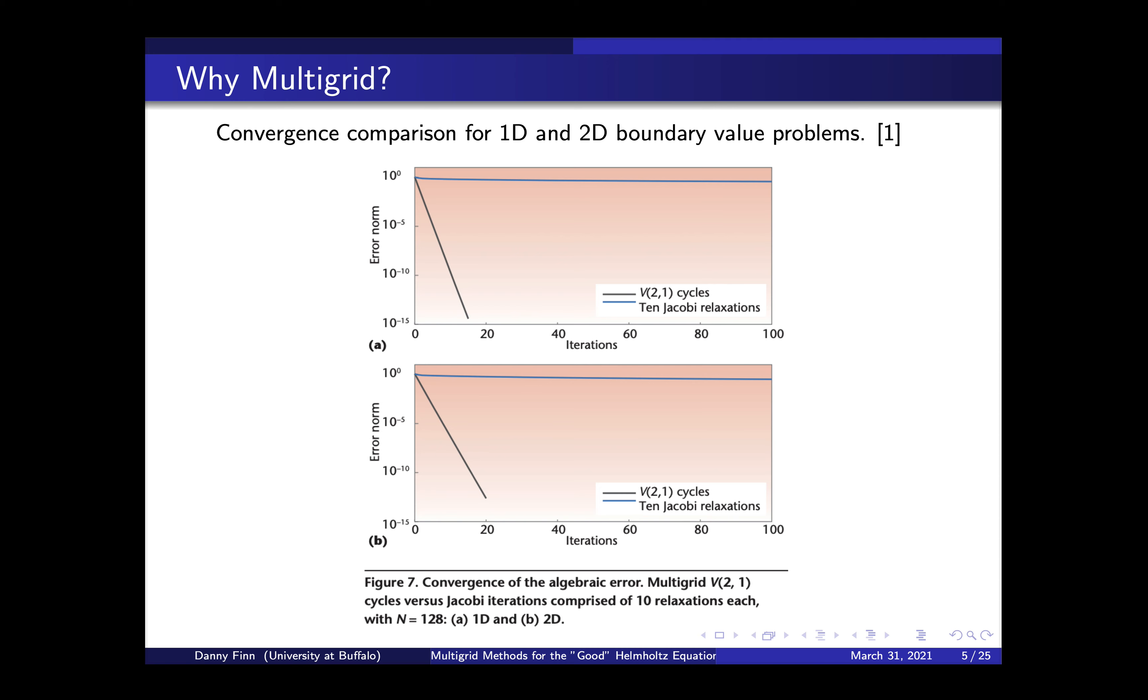So basically, at its core, it consists of these three pieces. You have a local solver on your fine grid called a smoother. You have a coarse grid solver, and you have a mapping between the coarse and the fine grids. So why are we interested in multigrid? This is a basic convergence comparison for some 1D and 2D fusion boundary value problem, some arbitrary kind of PDE. And as you can see, multigrid converges way faster than Jacobi. In 100 iterations, Jacobi doesn't even get near convergence.